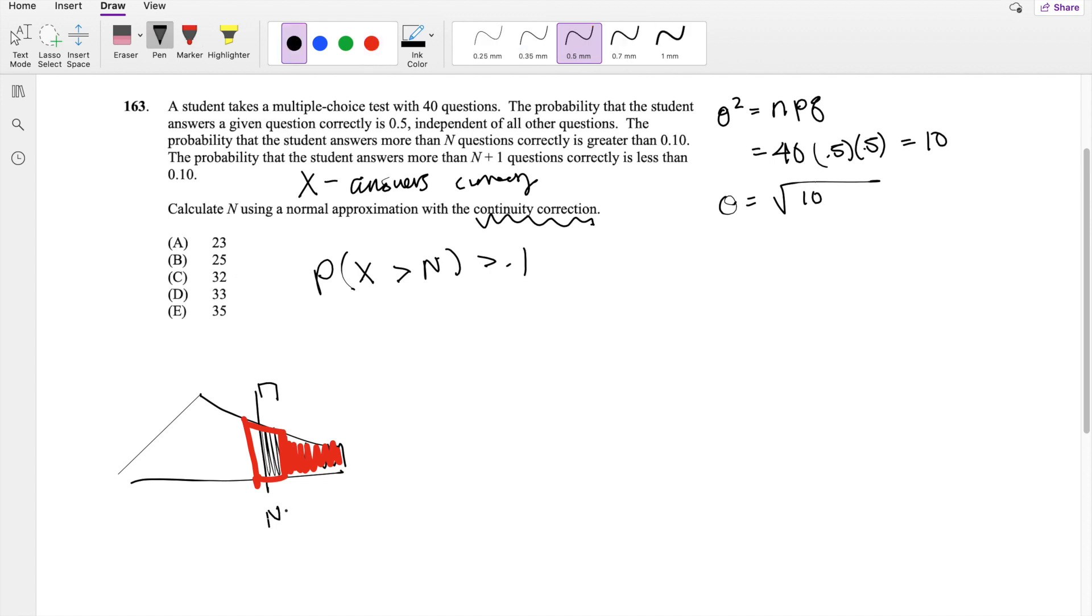So it's actually overestimating it by this little chunk. So someone said, okay, so then just scoot N this way by 0.5. Then N will be this part right here now. Like a new N will be here, and x is greater than N plus 0.5 right here. It's going to be better able to approximate the area that we're looking for for this discrete variable. So the probability after the continuity correction is going to look like probability that x is greater than N plus 0.5.